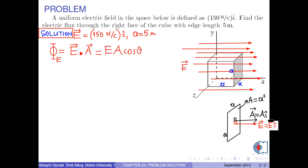E dot A is expanded as E times A times cosine theta. According to the figure, the electric field vector and the area vector are parallel.